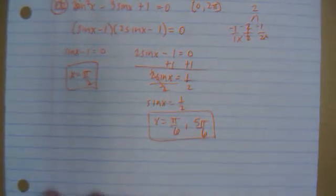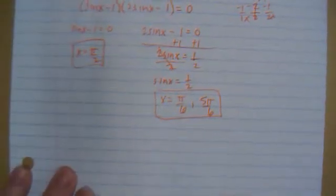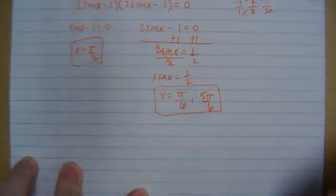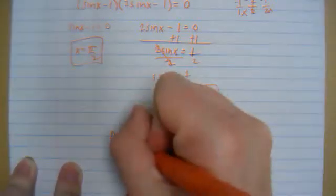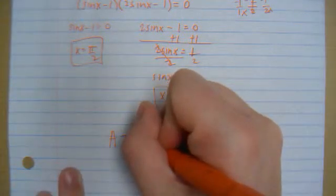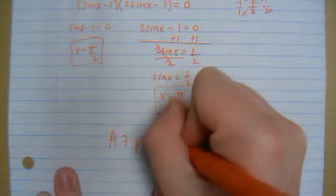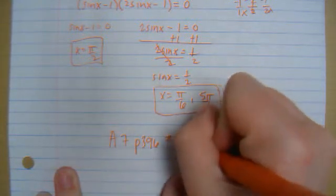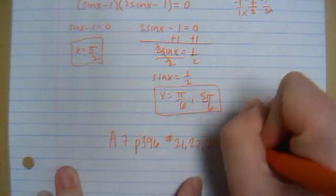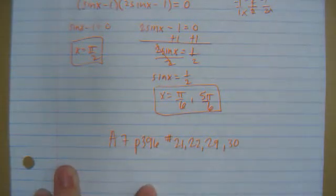So here you're factoring and finding the answers the same way we did yesterday. So these were real short notes. Your assignment is A7, page 396, numbers 21, 22, 29, and 30. Please let me know if you have any questions and good luck.